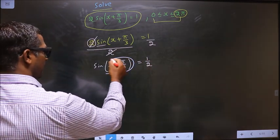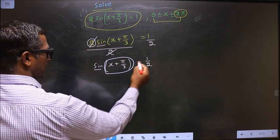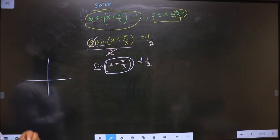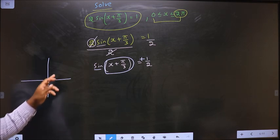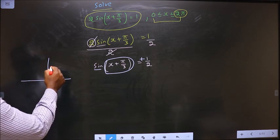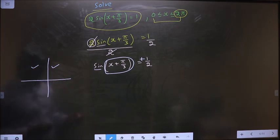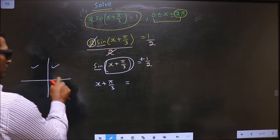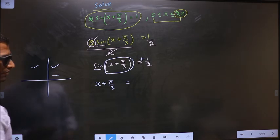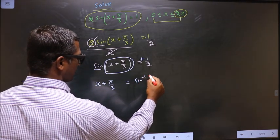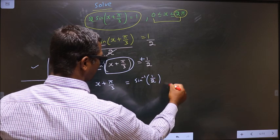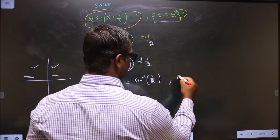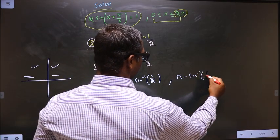So we get sin(x + π/3) = 1/2. Now to get the values for this — here we have sin and it is positive. So you should check in what quadrants sin is positive. Using the ASTC rule, sin is positive in the first and second quadrant. To get an angle in the first quadrant, do sin⁻¹(1/2). To get an angle in the second quadrant, do π − sin⁻¹(1/2).